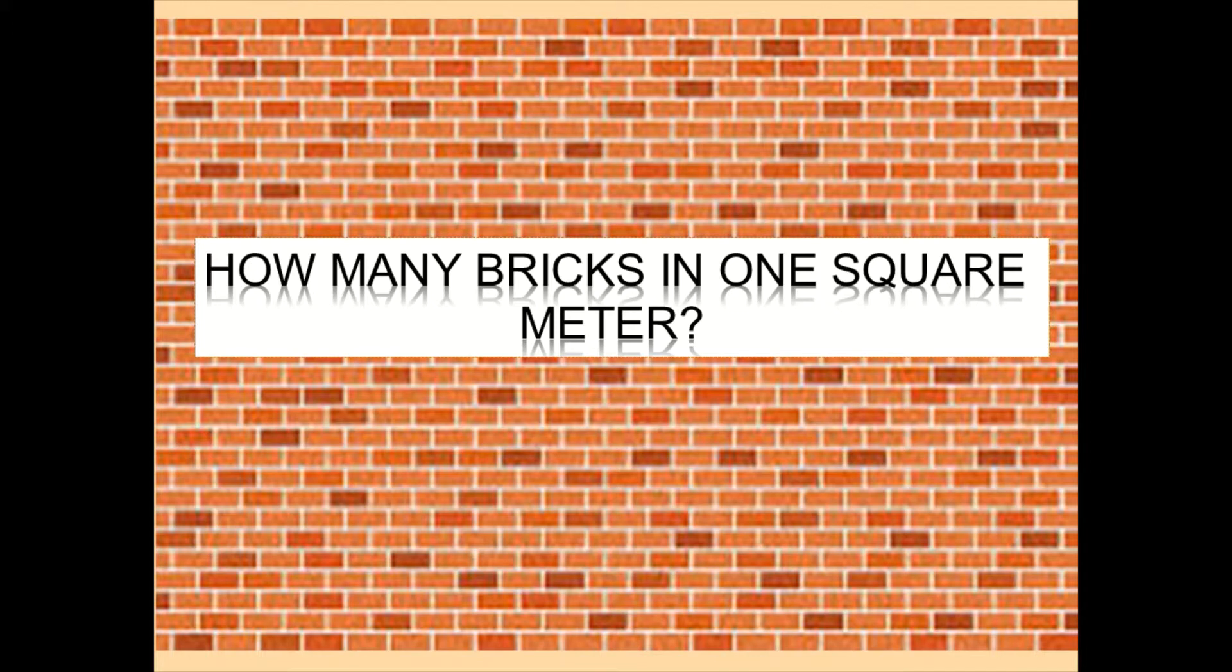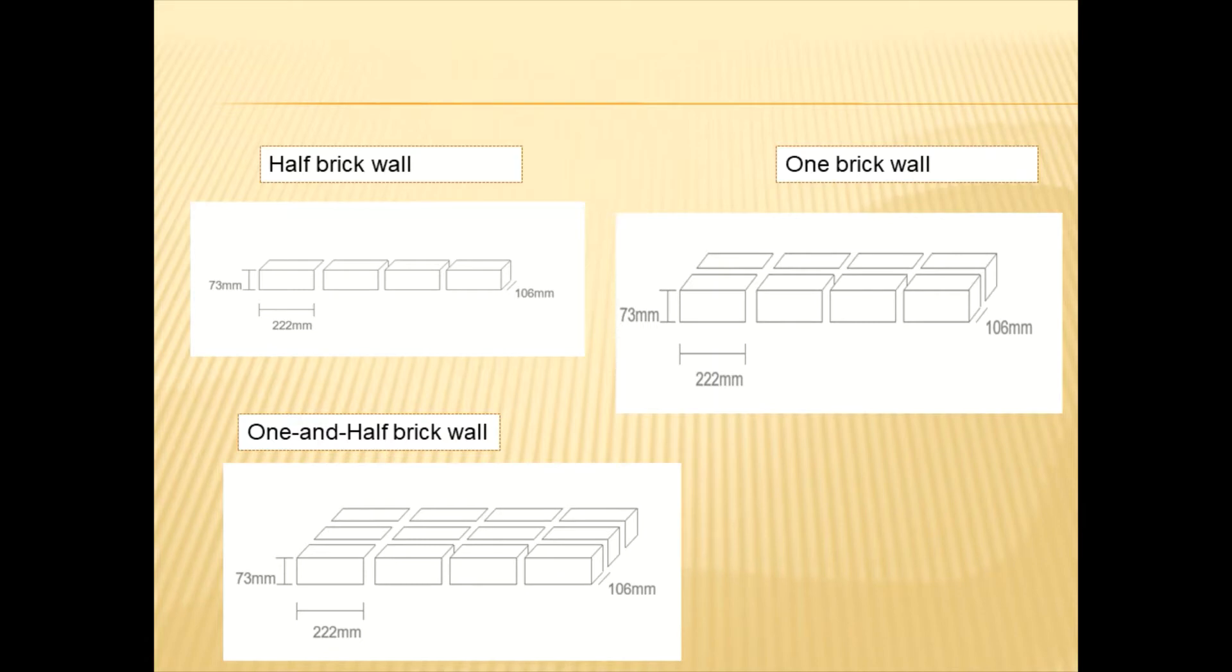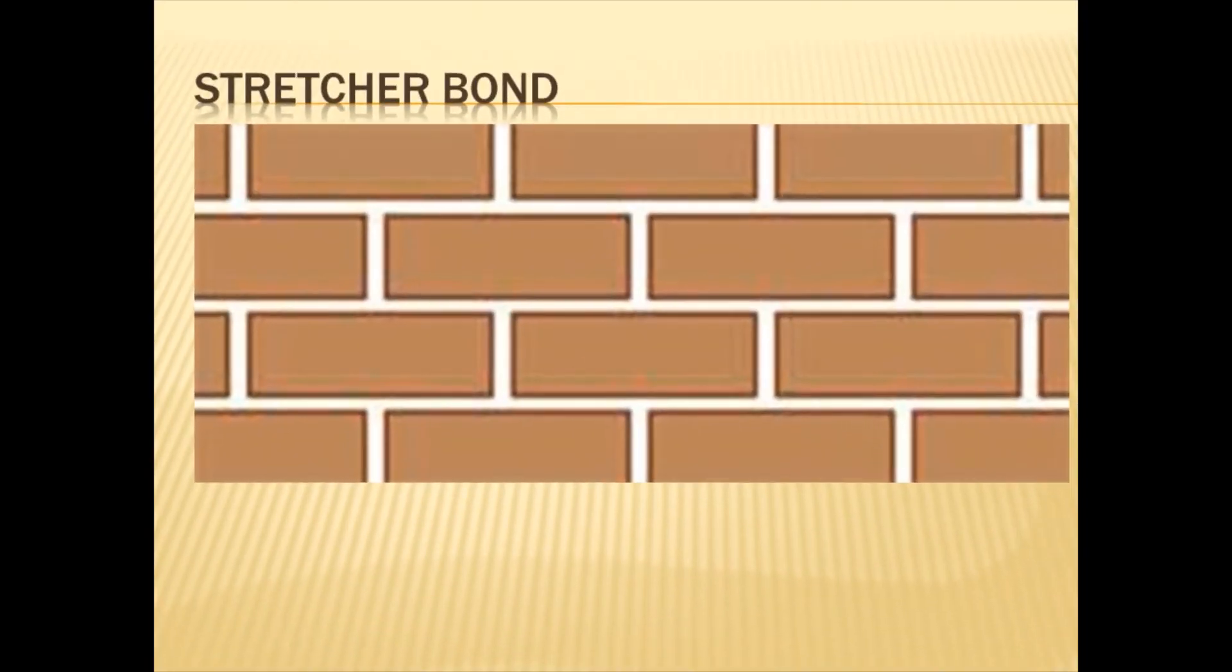The first one is a half brick wall, which consists of one skin. The second one is a one brick wall, which consists of two skins. The third one is a one-and-a-half brick wall, which consists of three skins.